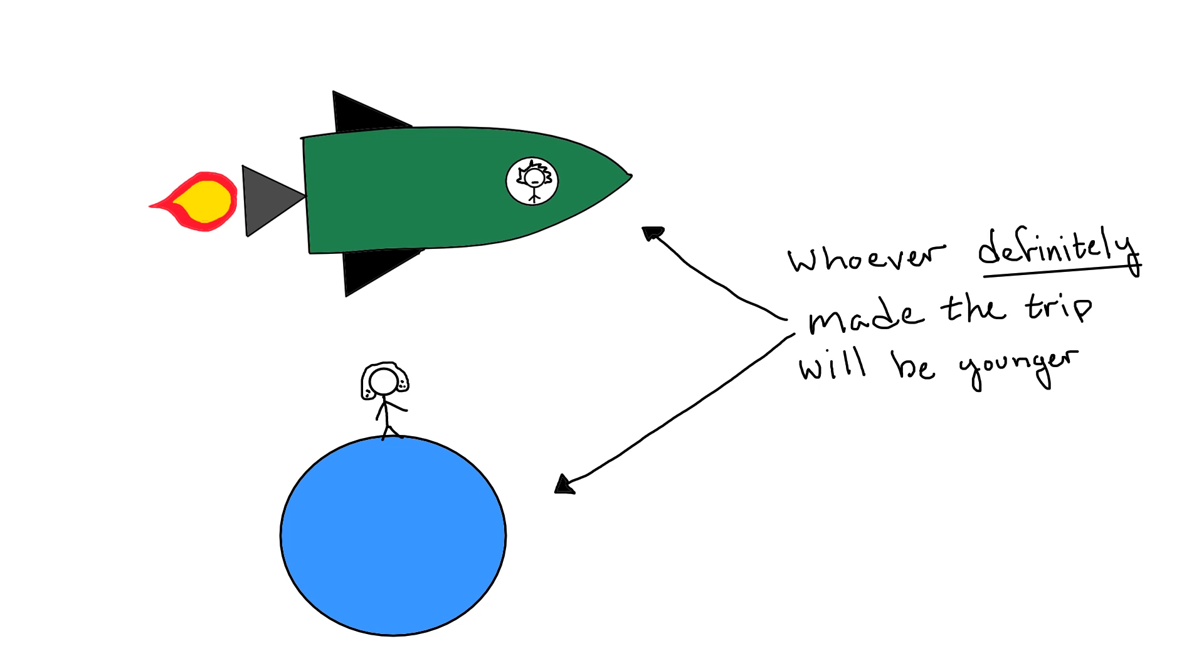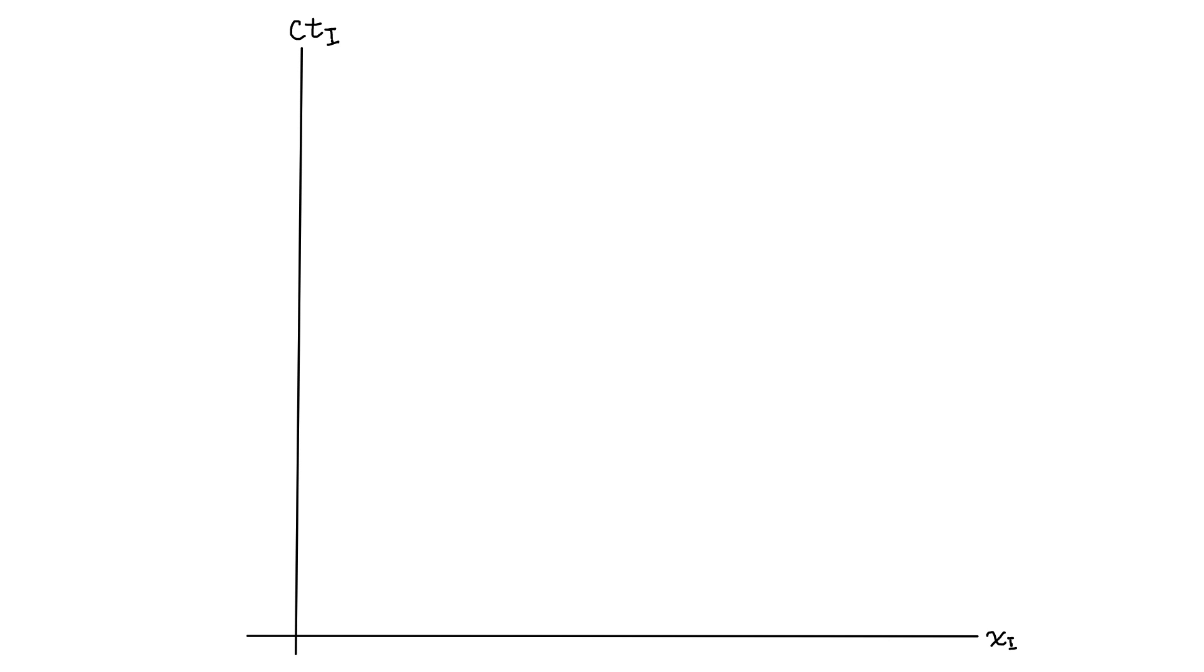To do this, let's draw a space-time diagram in Isaac's frame. Now on this diagram, we can draw Albert's trajectory according to Isaac as he goes out to the star, turns around, and comes back.